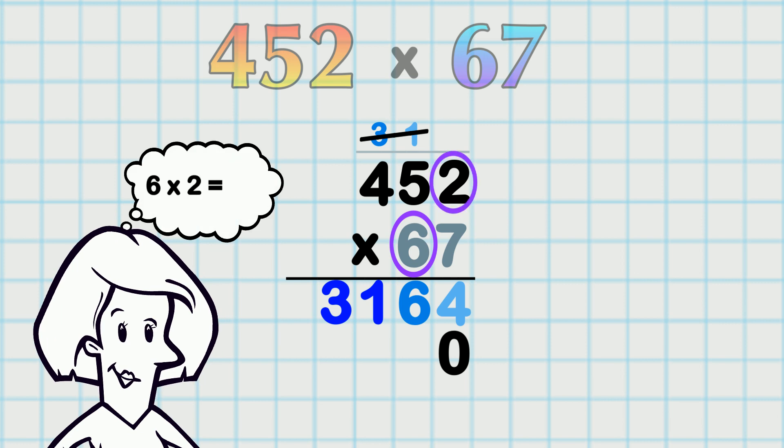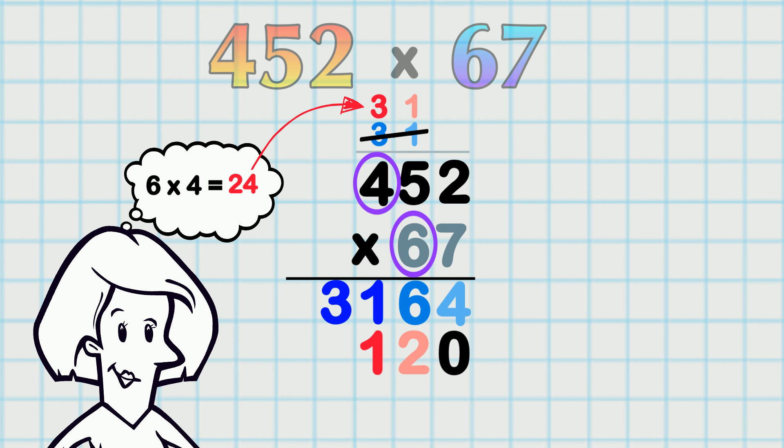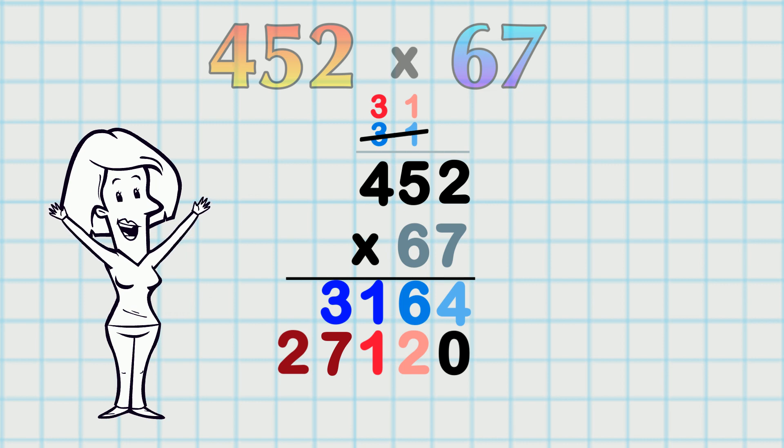Now 6 × 2 is 12! Next, 6 × 5 is 30! And the one we carried, that's 31! And then we have 6 × 4, that's 24! Plus that 3 we carried, that's 27! And that's the multiplication stage all done!